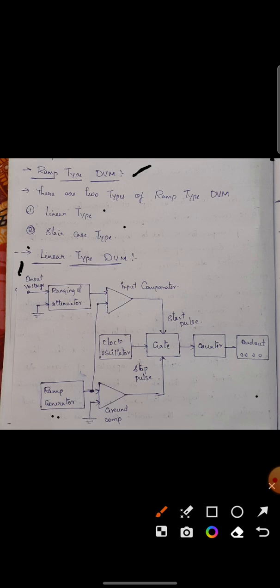If the signal is low, then it will amplify the signal, and if the signal is high, it will attenuate the signal. And finally, it will give to the input comparator.